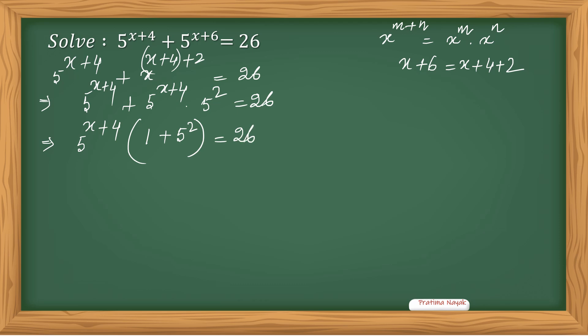So 5 raised to the power x plus 4 multiplied by 26 equals 26. Cancel them, so 5 raised to the power x plus 4 equals 1.